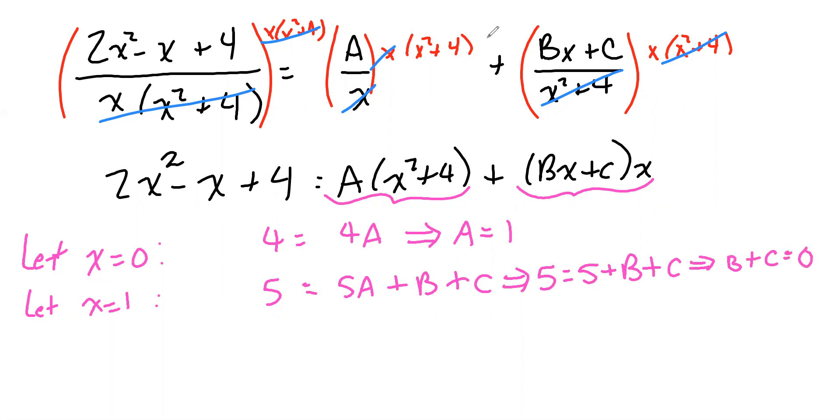Or equivalently, b equals negative c or c equals negative b. In fact, let's go ahead and write that implication, which implies that b is equal to negative c. Now, does that help us? No. We don't know b or c, but now if we know one, we know the other.